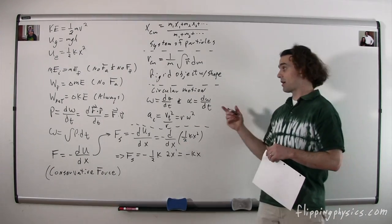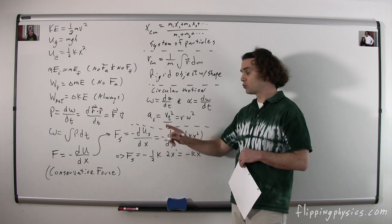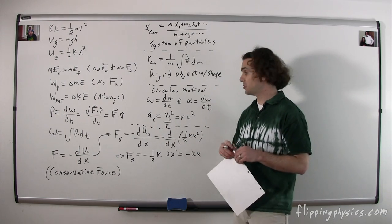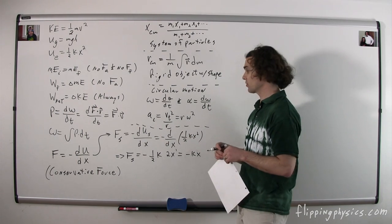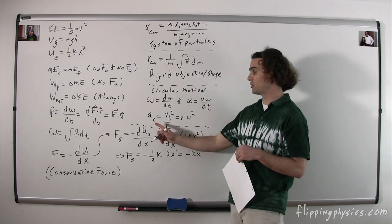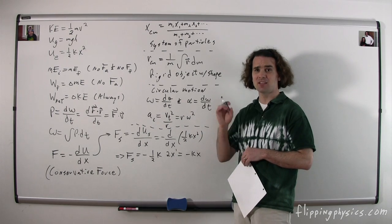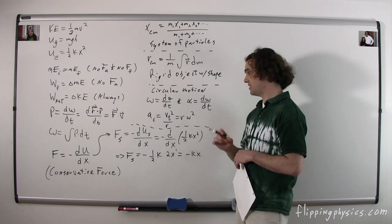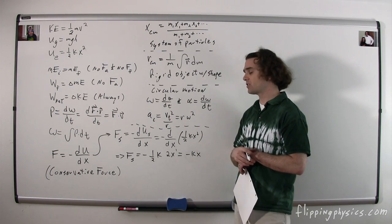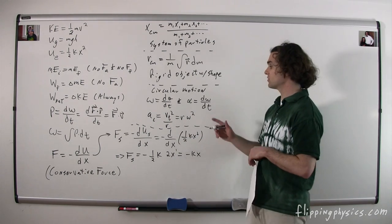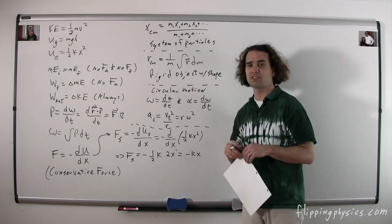We could also talk about the centripetal acceleration — the acceleration responsible for circular motion, in the inward direction, because centripetal means center-seeking. That's equal to the tangential velocity squared divided by the radius, and it's also equal to the radius times the angular velocity squared.